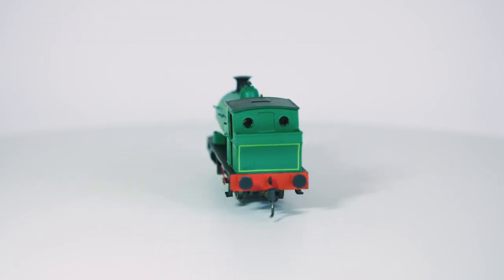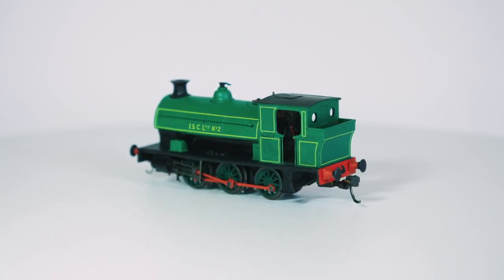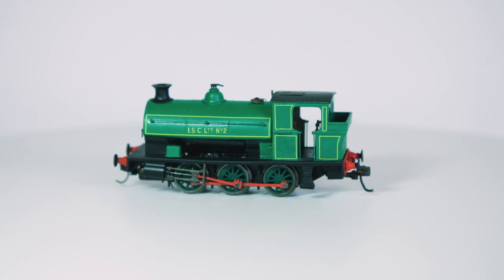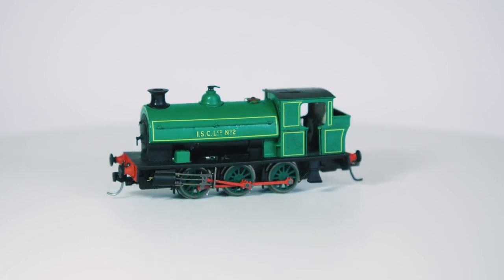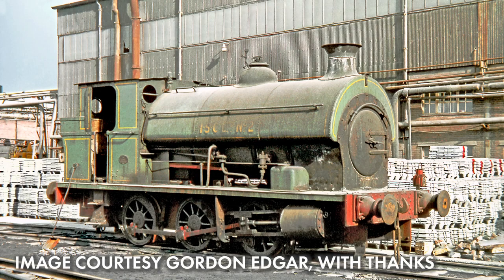This kit can be supplied with custom-made transfers designed by the one and only James Hilton of Narrow Planet and Planet Industrials fame. These are based off the only colour photo I've yet found of the loco in industrial use, this 1970 image by Gordon Edgar. Many thanks to Gordon for allowing us to use this photograph, it's been a great help to try and replicate this in model form.